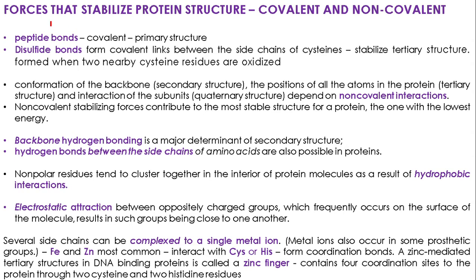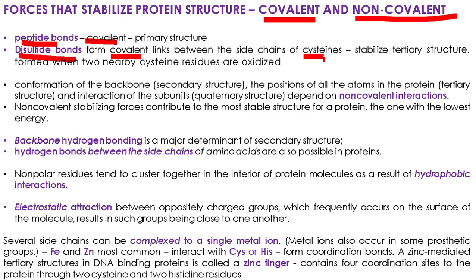What are the different forces that stabilize the structure of proteins? Some of the forces are covalent bonds and some others are non-covalent bonds. For example, the primary structure is stabilized by peptide bonds, which are covalent bonds. Disulfide bonds are also covalent bonds, formed between cysteines. Cysteine is an amino acid containing an SH group in its R group. The SH group of one cysteine residue forms a disulfide bridge with the SH group of a cysteine residue of another chain or a different part of the same chain. Disulfide bridges are important in the formation of tertiary structure, not in the formation of primary or secondary structure.